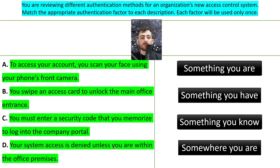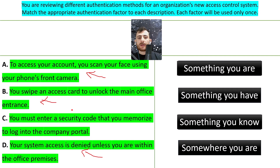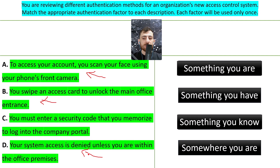Each choice can be rephrased into other examples. A could be using your fingerprints. B could be using an access badge to enter a data center. C could be the password for your email account. And D could be having a VPN connection — meaning you are replicating your physical presence by connecting to a VPN — which is the authentication factor of somewhere you are.